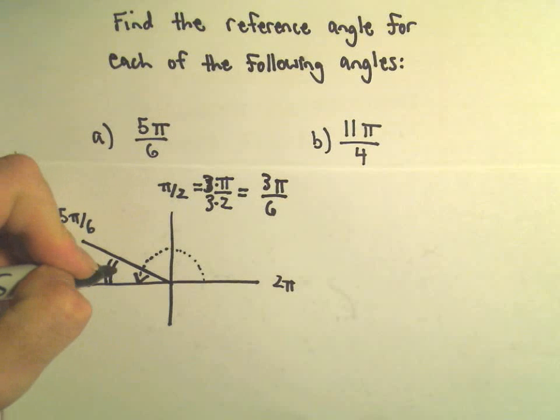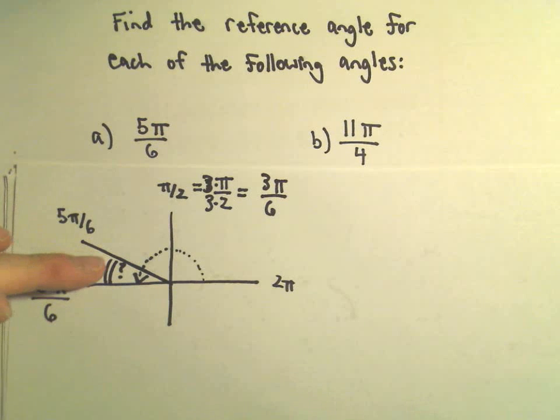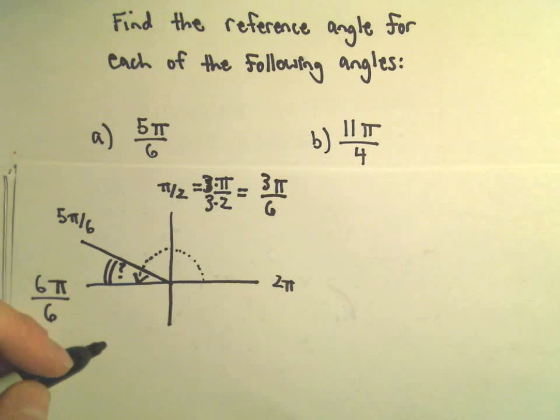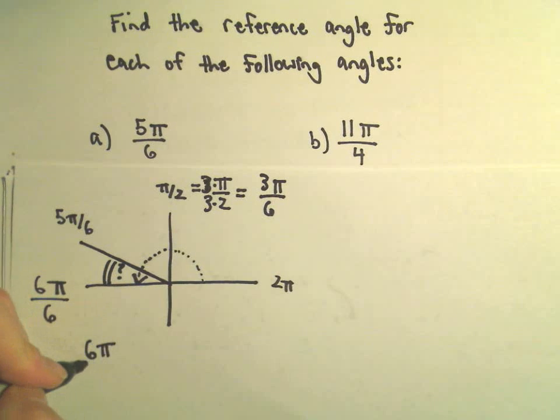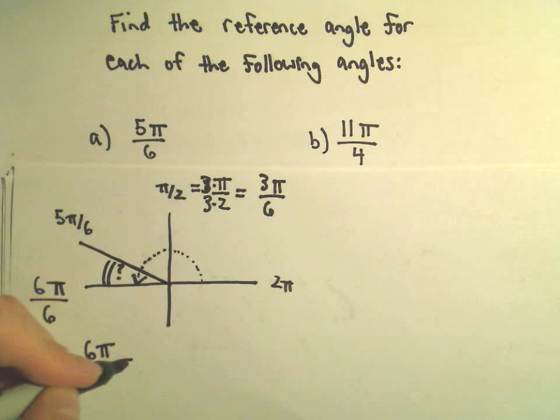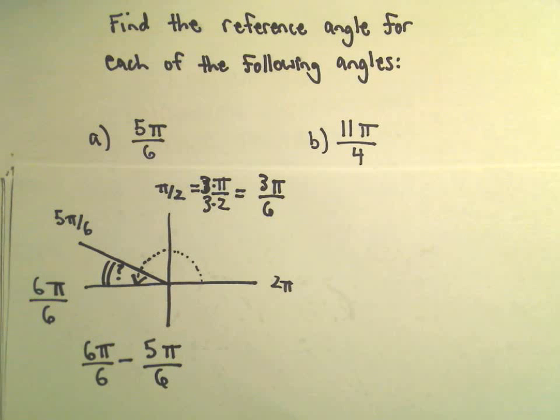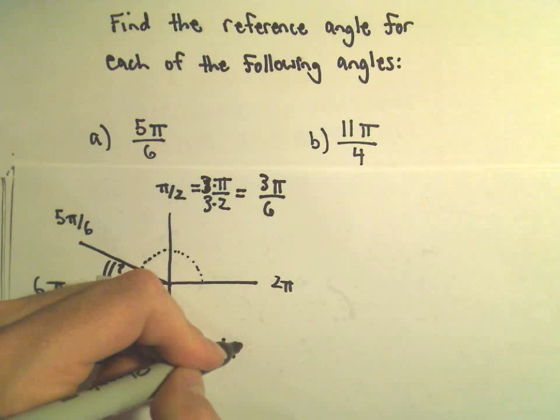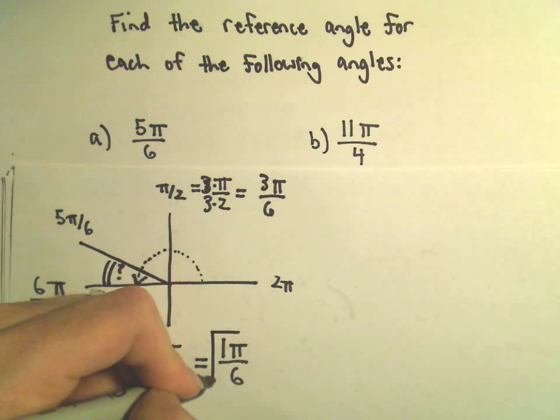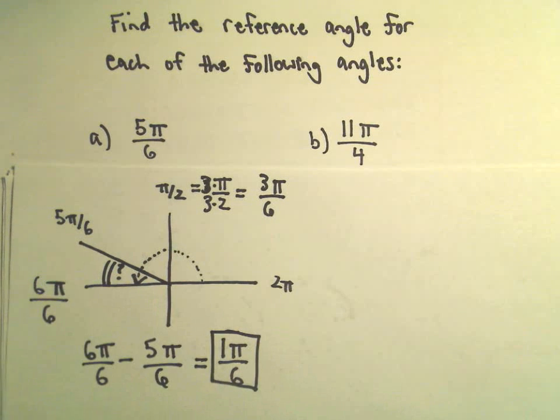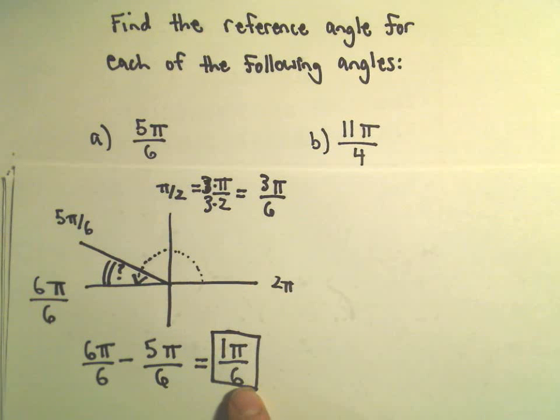All I'm trying to find is this reference angle, which is this little angle in between here. Had we gone all the way, we would have been 6π over 6, but we didn't quite make it that far. So I'm going to subtract away 5π over 6. 6π minus 5π is π over 6, and we would say that is the reference angle for the angle 5π over 6.